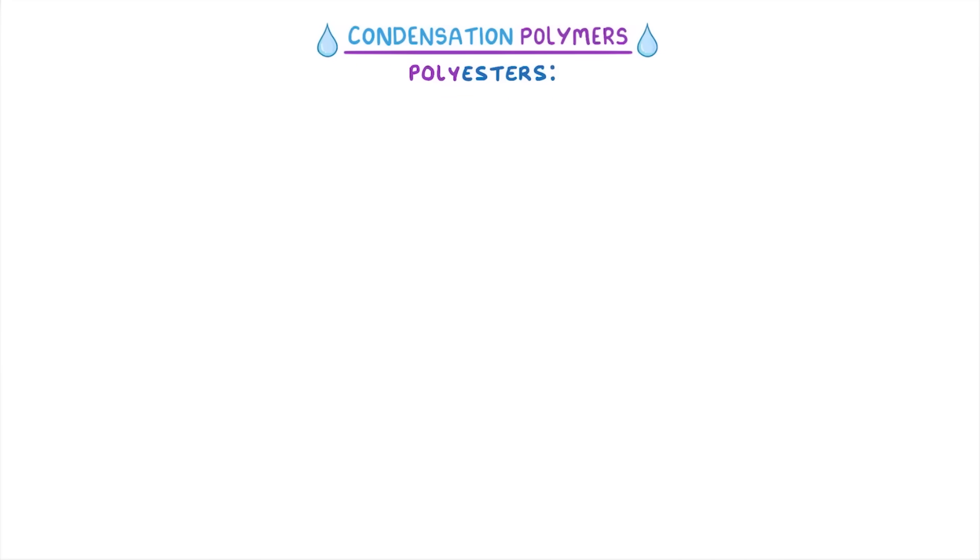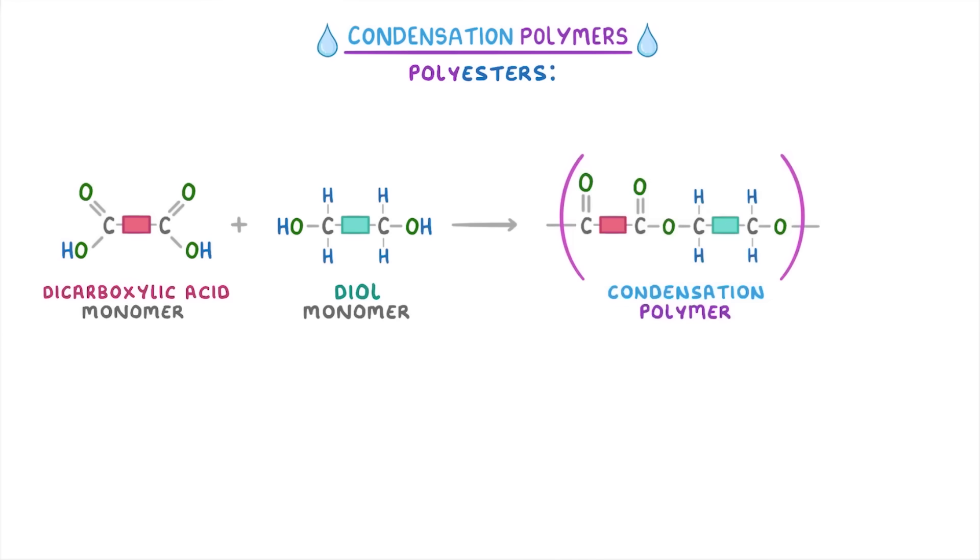If we now put all of this together, we effectively had a dicarboxylic acid monomer plus a diol monomer go to form a condensation polymer, which in this case was a polyester because this group in the middle is an ester link. We also formed two molecules of water.